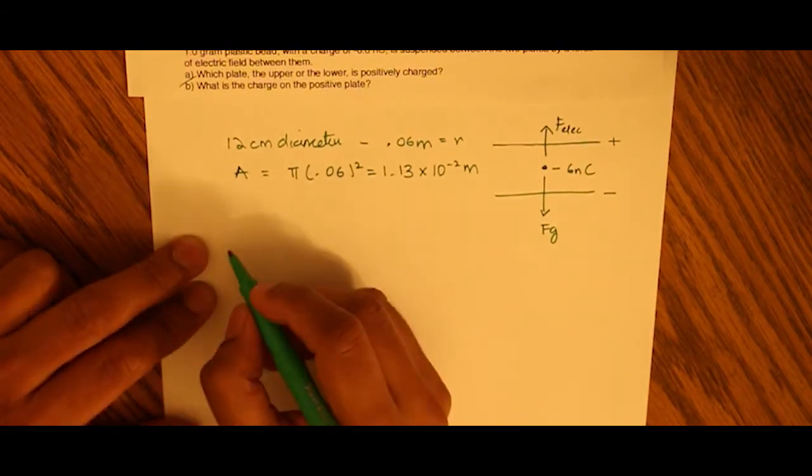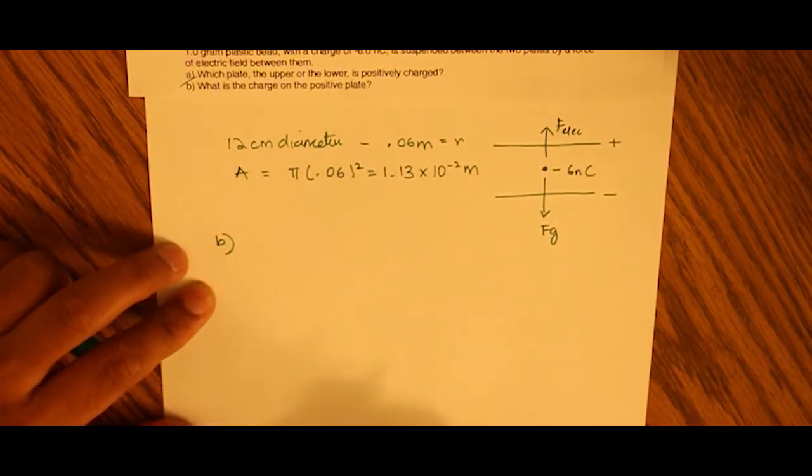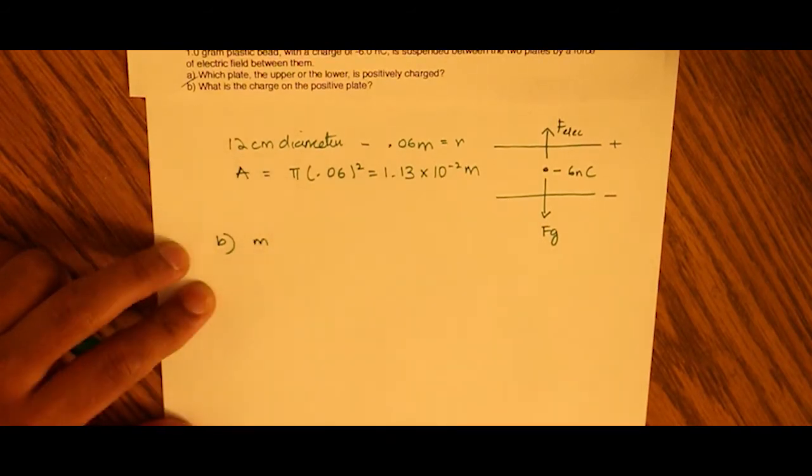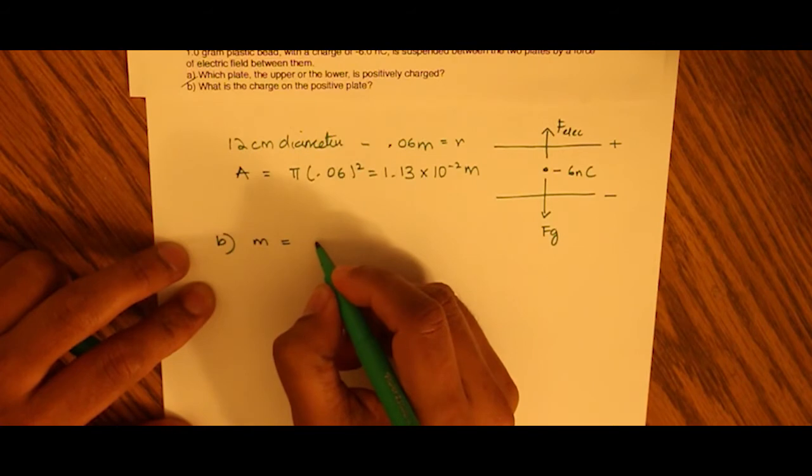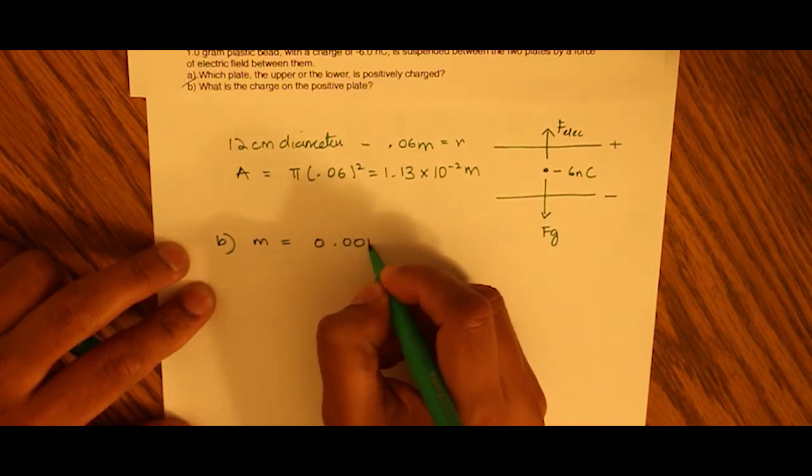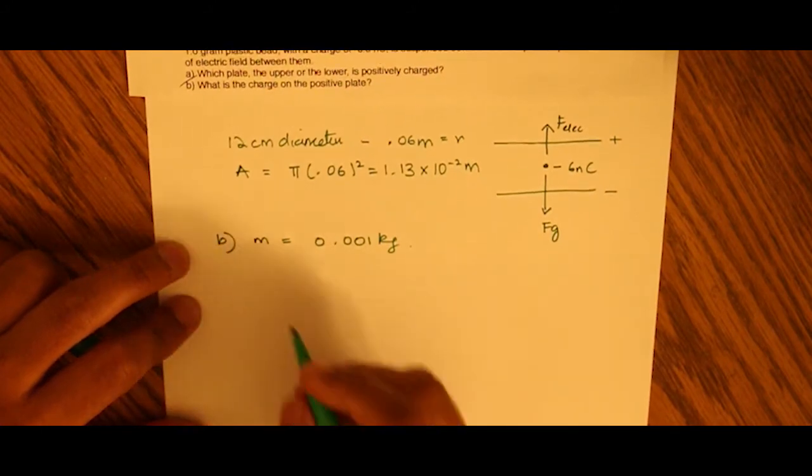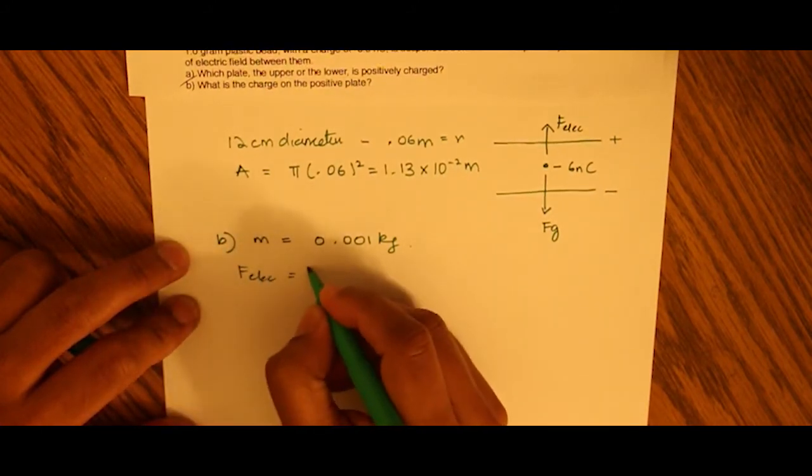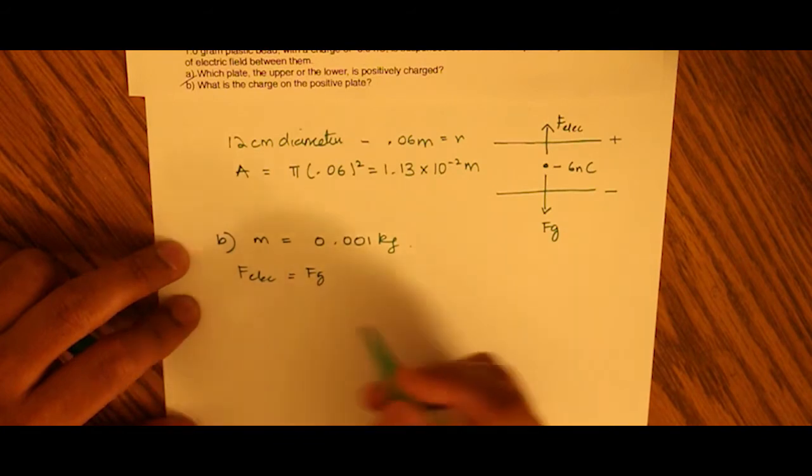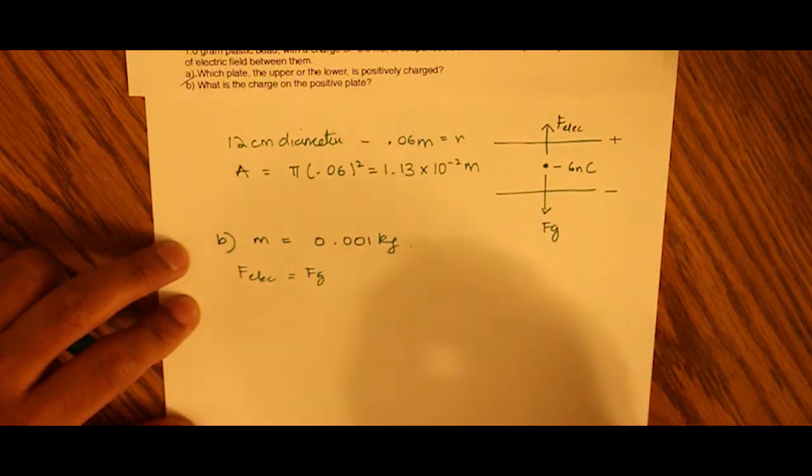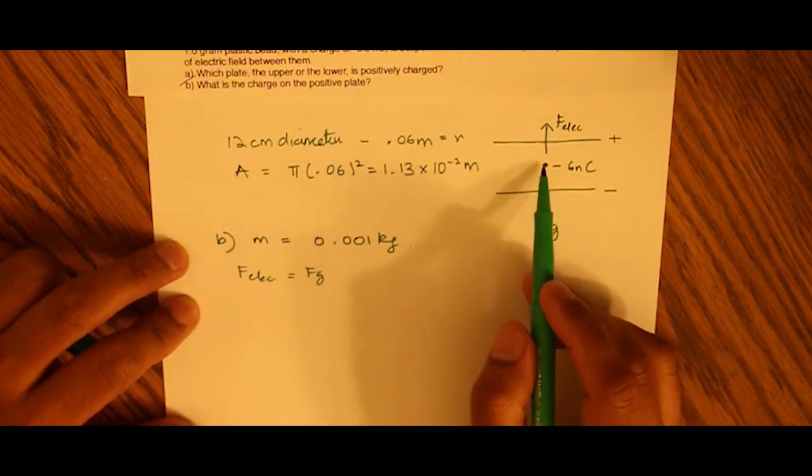Next question is, we know that the mass of the bead, the plastic bead, is 1 gram or 0.001 kilograms. The next thing that we know is that the F electric must equal the F gravitation, the force gravitation, because it's stationary.